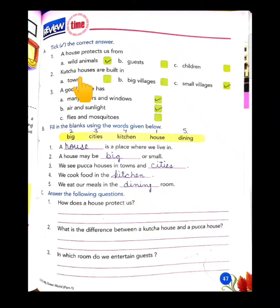Number two: kacha houses are built in towns, big villages, small villages. So we all know in small villages where kacha houses can be seen.